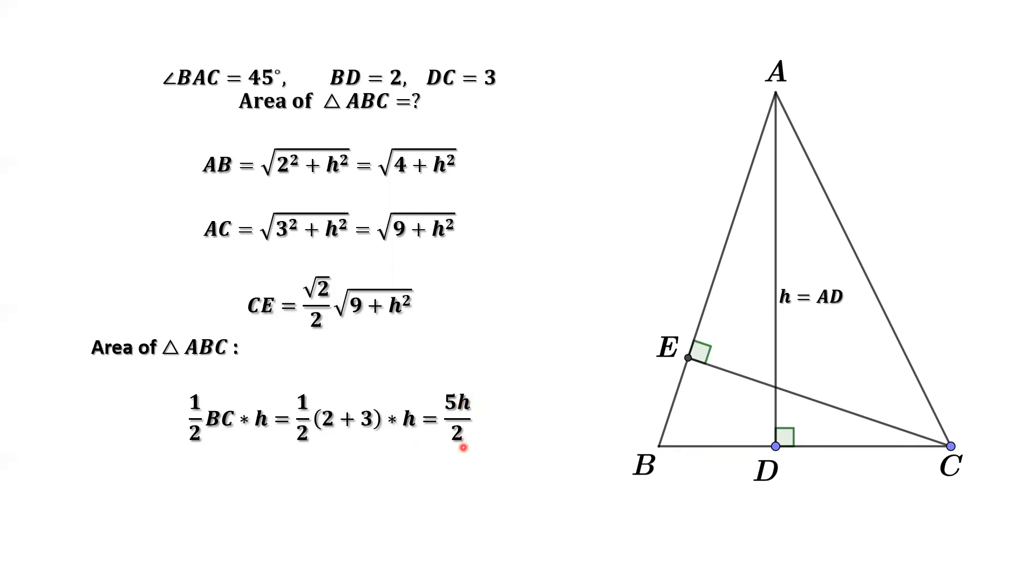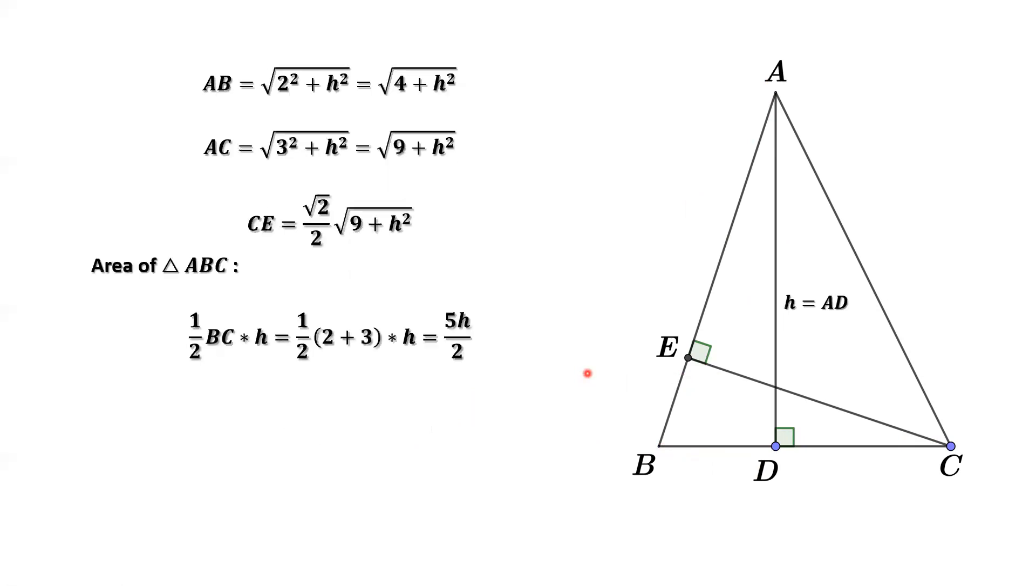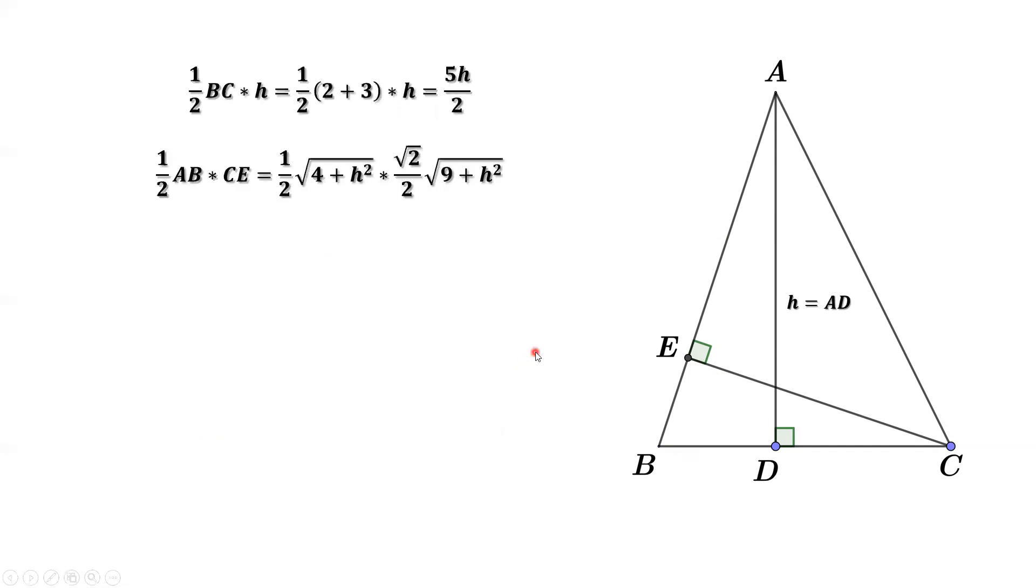If we consider AB as the base and CE is the height, we have a different way to calculate the area. 1 half times AB times CE. CE we have here. AB we have here. Plug in here. Simplify.